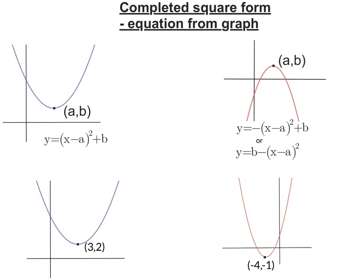In this video, we're going to go from the graph of completed square form quadratic to its equation. What you need to know is that the x-coordinate of the turning point goes inside the brackets but changes sign. The y-coordinate of the turning point goes outside the bracket and does not change sign. The other big difference is if you've got a sad curve, you'll have a negative attached to the bracket.